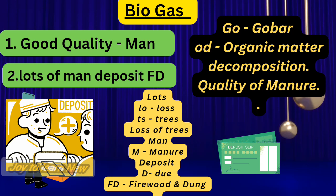Lots of man deposit FD — LO refers to loss, T refers to trees. It reduces or prevents the loss of trees. MAN refers to manure. It prevents the loss of trees and manure due to burning. FD: F refers to fuel wood and D refers to dung cakes. So it prevents the loss of trees and manure due to burning of fuel wood and dung cakes.